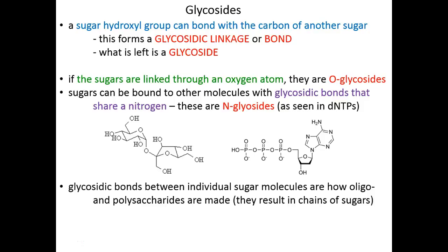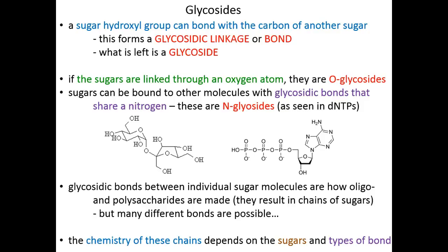Glycosidic bonds between individual sugar monomers — through monosaccharides — is how we begin building these larger complex carbohydrates such as oligo- and polysaccharides. We can have many different types of glycosidic bonds — O's and N's — and even their configuration can differ. There are many different sugars we can link together, so the diversity is huge. Also, the chemistry of these chains of sugars depends very largely not only on the types of sugars in the chain but the types of bonds holding them together. So let's begin talking about more complex carbohydrates.